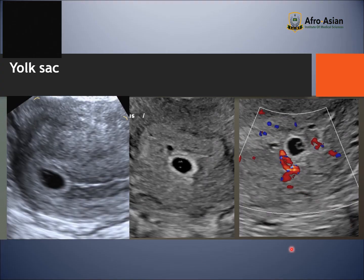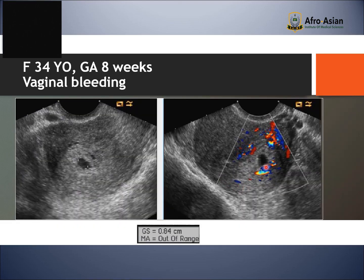Here is our interesting case. We can see by TVS the yolk sac and the gestational sac. There is a small rounded area inside which is not properly visible. This was a case of a 34-year-old female at a gestational age of eight weeks who presented with vaginal bleeding. Here you can see the gestational sac has no yolk sac — so absence of yolk sac.